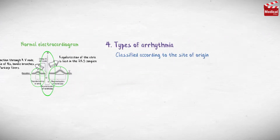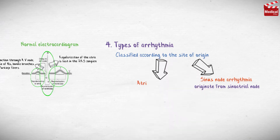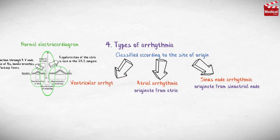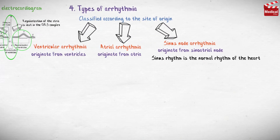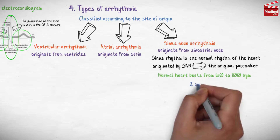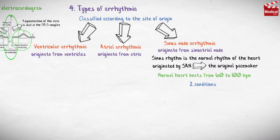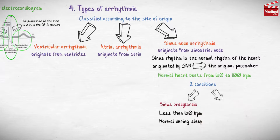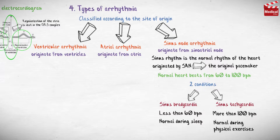Cardiac arrhythmias can be classified according to the site of origin: sinus node arrhythmias originate from the sinoatrial node, atrial arrhythmias originate from the atria, and ventricular arrhythmias originate from the ventricles. Sinus rhythm is the normal rhythm of the heart, originated by the SAN. The normal heart beats from 60 to 100 beats per minute. There are two conditions related to sinus rhythm that may be normal or clinical depending on the underlying cause: sinus bradycardia, when SAN fires less than 60 beats per minute (normal during sleep), and sinus tachycardia, when SAN fires more than 100 beats per minute (normal during physical exercise). Cardiac arrhythmias originating from other parts of the atria or ventricles are always clinical.